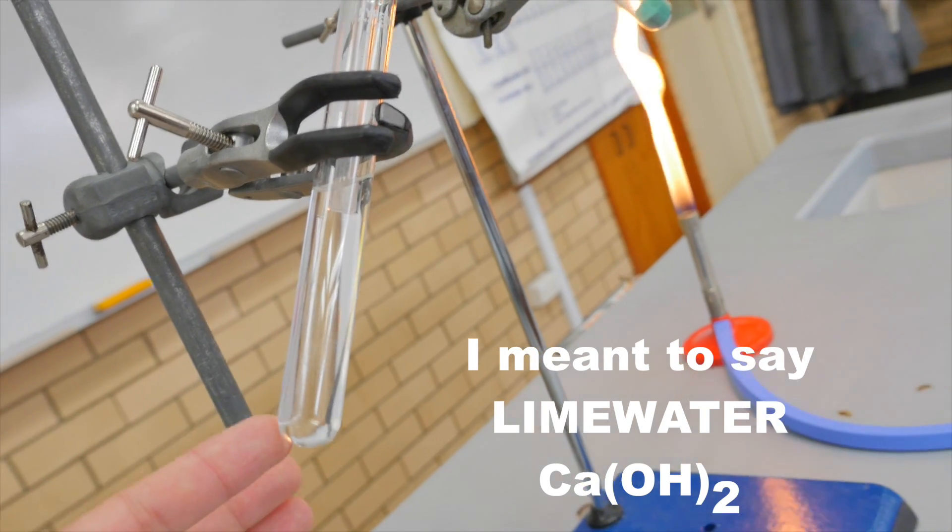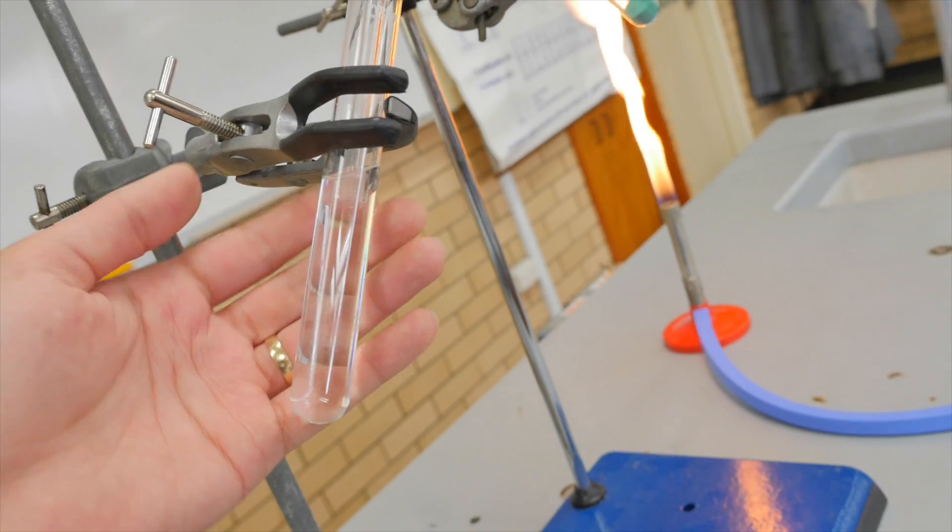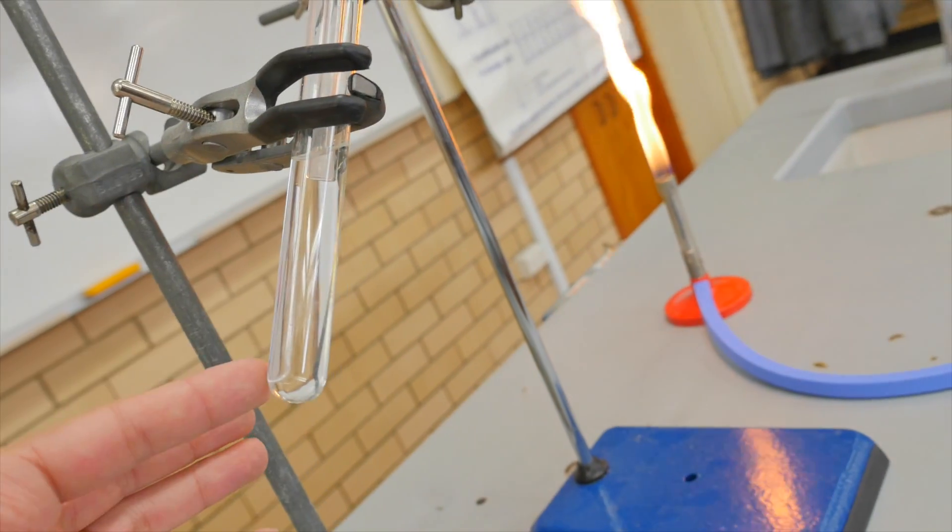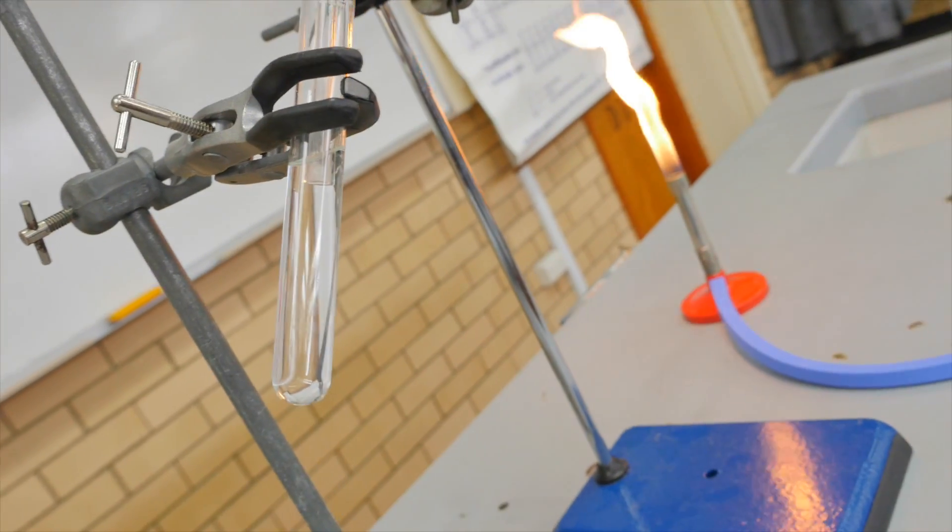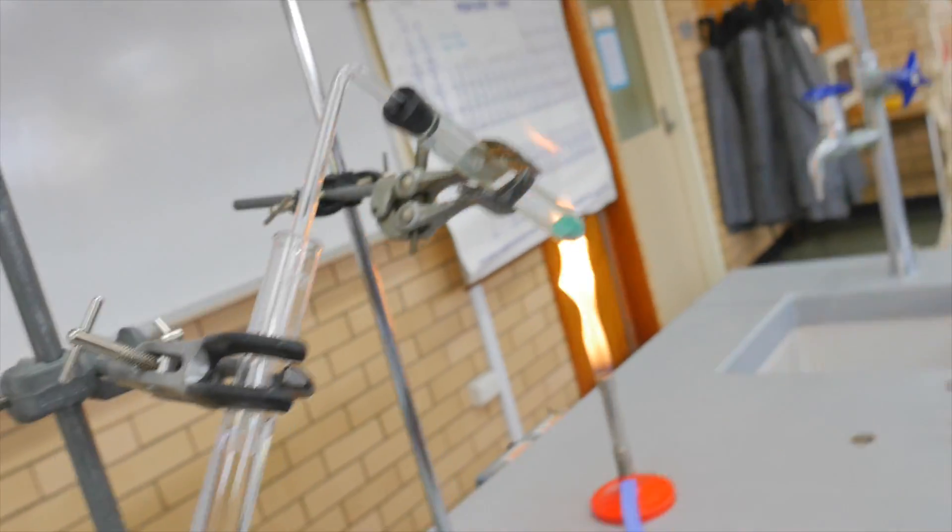Lime water reacts with carbon dioxide and it makes it precipitate. So, if we see this change into a cloudy color, we know it must be carbon dioxide. If not, it might just be the oxygen or something like that. So, let's put it down here in the tripod and see what happens.